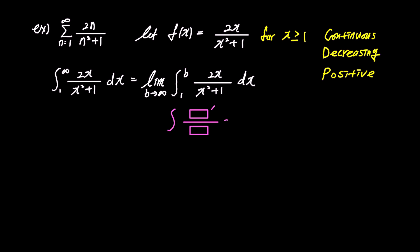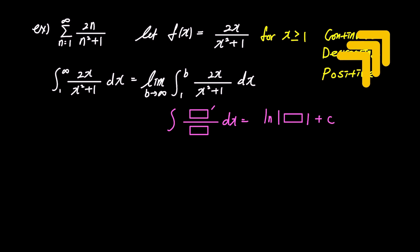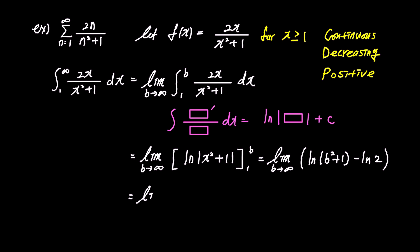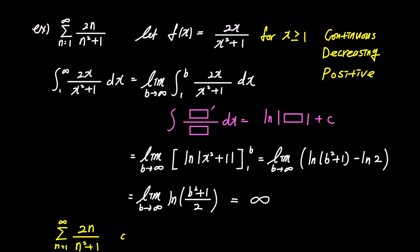Now let's integrate to apply the integral test. The integral of 2x over x squared plus 1 from 1 to infinity involves improper integration, so let's express it using limits — as the limit of b goes to infinity of the integral from 1 to b of 2x over x squared plus 1. When integrating a fraction where the derivative of the denominator appears in the numerator, the result is ln of the absolute value of the denominator. Applying this, the result is ln|x² + 1|, evaluated from 1 to b. Taking the limit as b approaches infinity gives the limit of ln(b² + 1) over 2, which ultimately diverges to infinity. Since the improper integral diverges, the infinite series 2n over n squared plus 1 will also diverge.